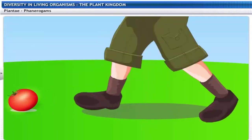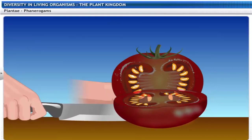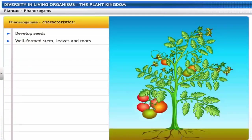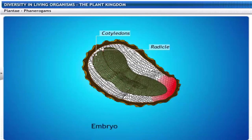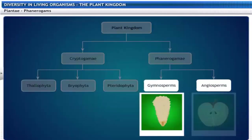Tomatoes have a lot of seeds inside them — the seeds are the result of the reproductive process. This makes the tomato a Phanerogam. All plants that develop seeds and have well-formed stem, leaves and roots belong to the sub-kingdom Phanerogamae. Phanerogams contain an embryo along with stored food that helps the embryo to germinate. Based on whether the seeds are naked or enclosed in fruits, Phanerogams are further classified into Gymnosperms and Angiosperms.